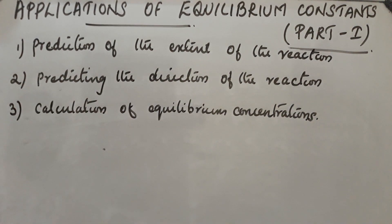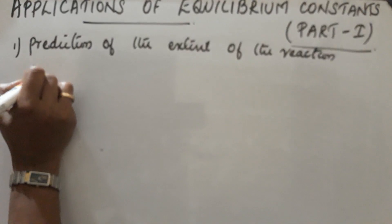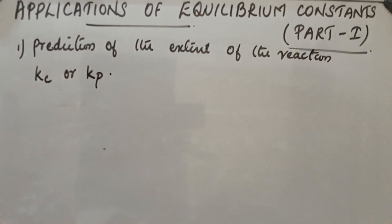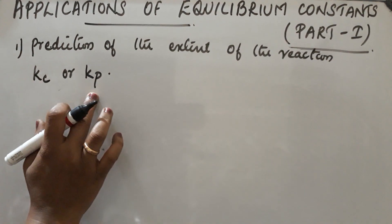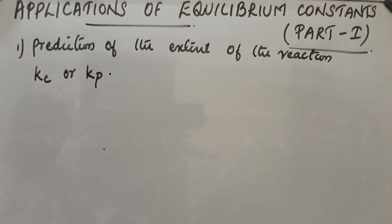Today we are discussing the first point — prediction of the extent of the reaction. We know Kc or Kp are the equilibrium constants: Kc depends upon concentration and Kp depends upon partial pressure. This is expressed as a stoichiometric equation equal to the concentration of products divided by the concentration of reactants.